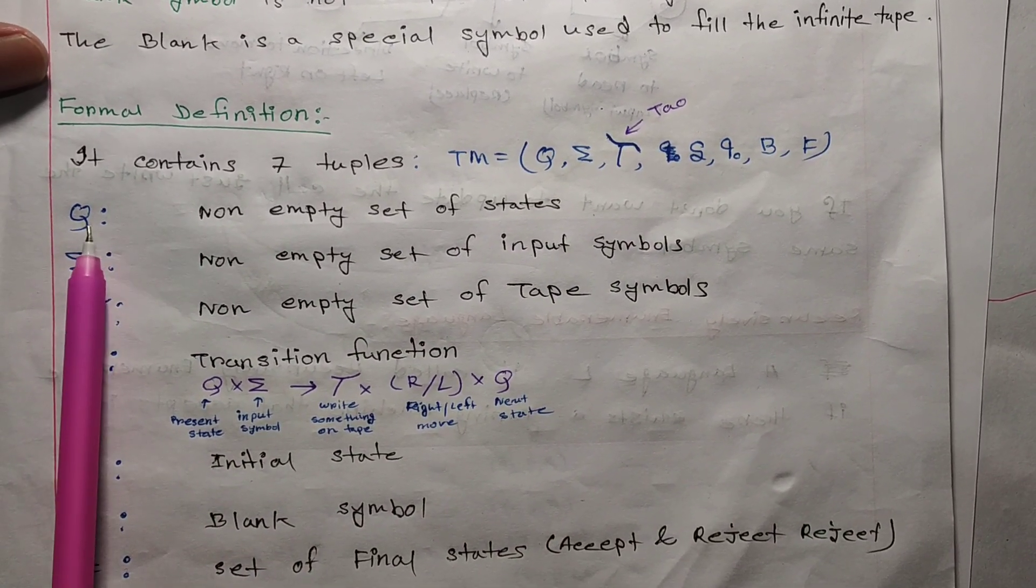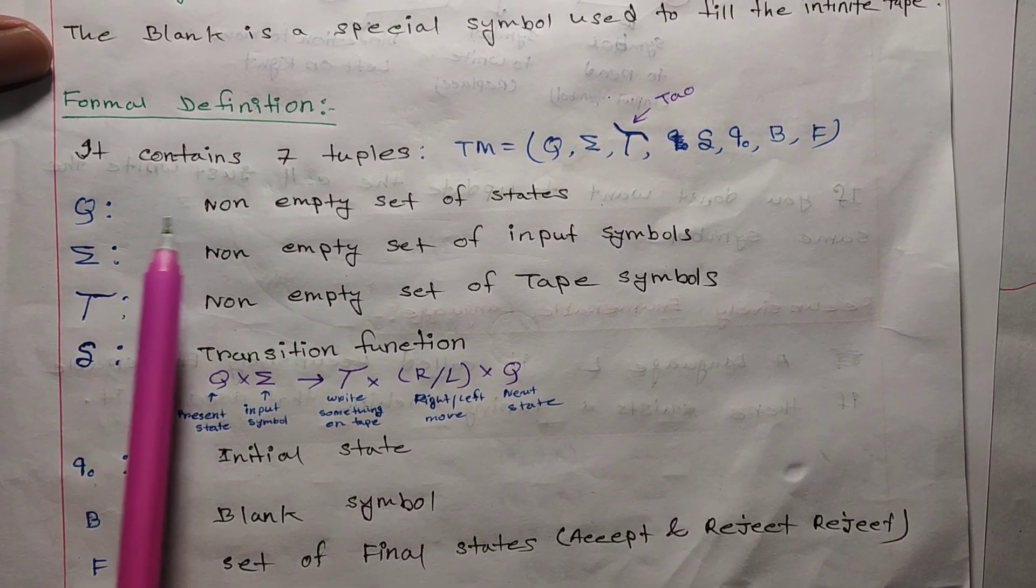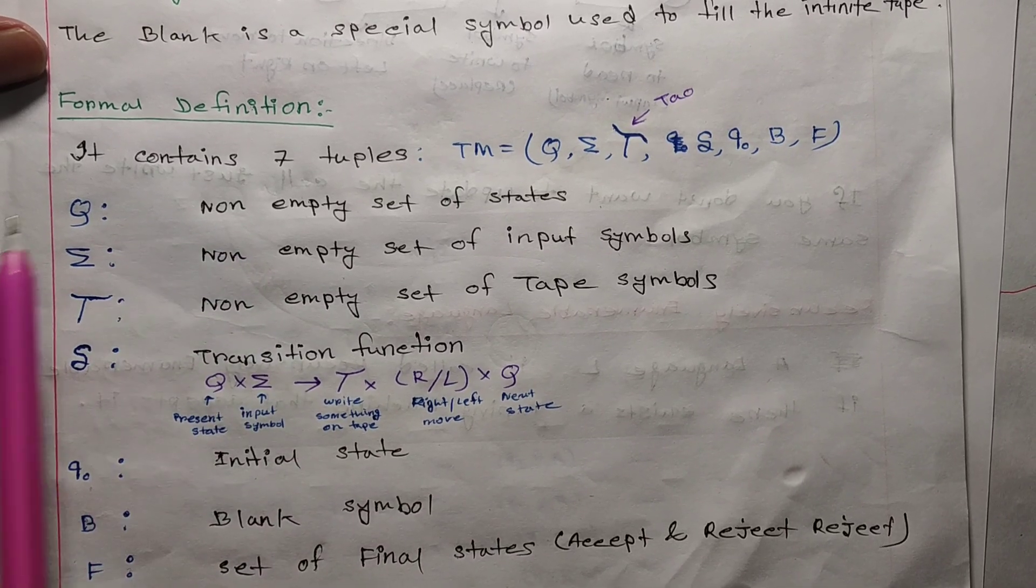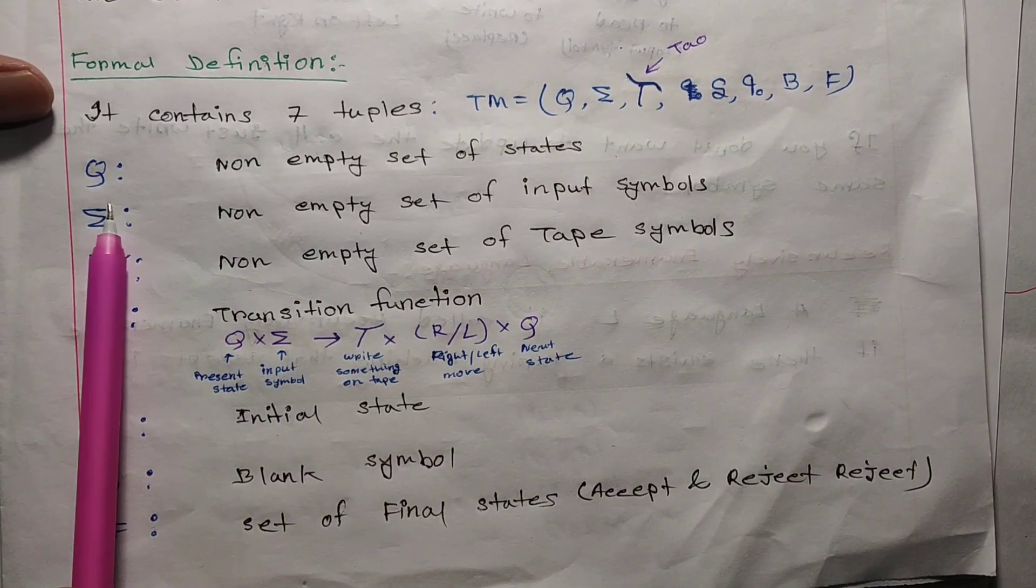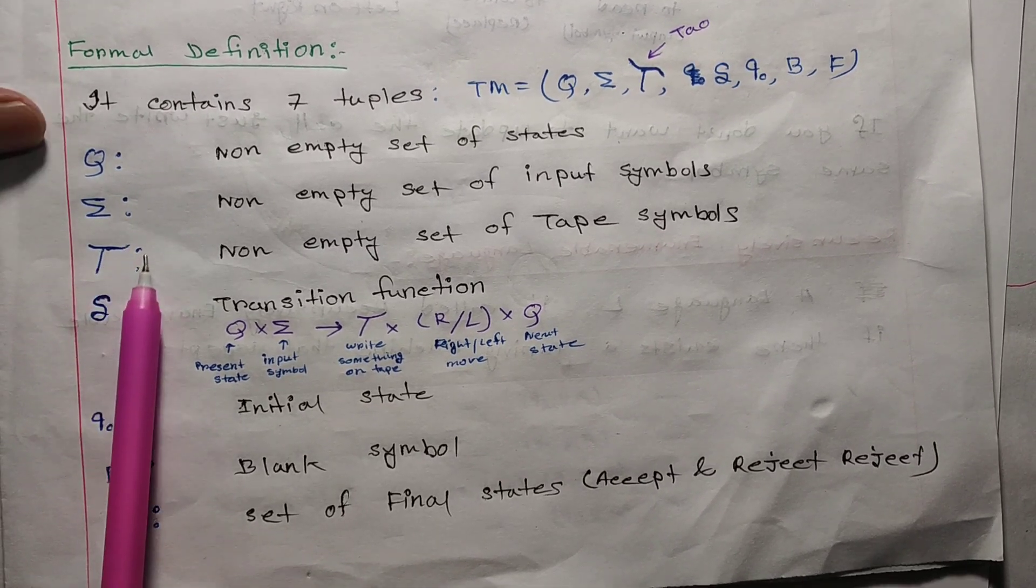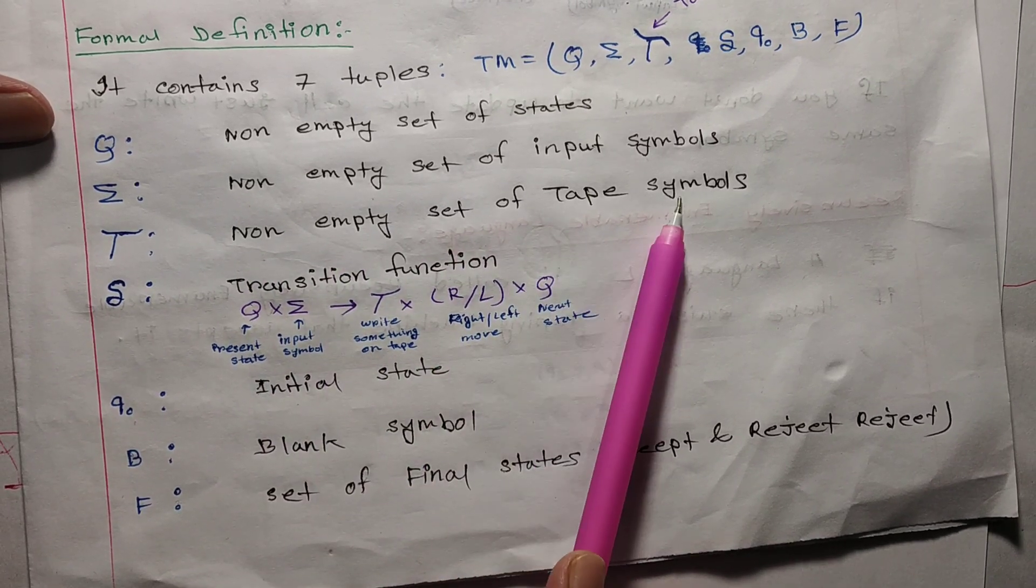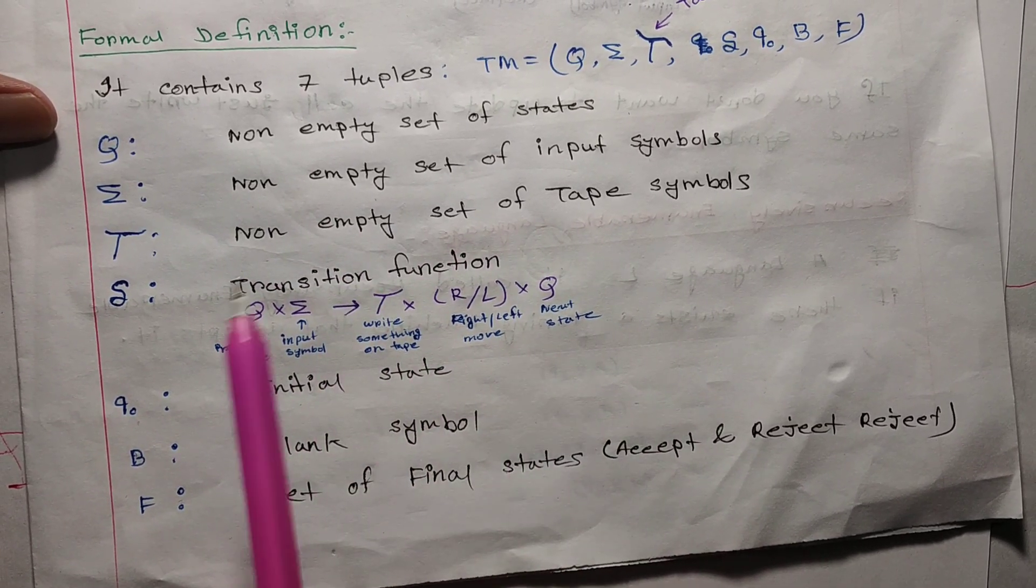Q is the non-empty set of states. Σ is the set of input symbols. Γ is the non-empty set of tape symbols.